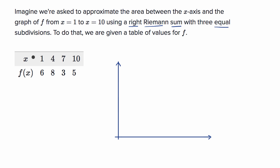We are going from x equals one to x equals 10, so let me mark off values one through ten on the x-axis. They give us the value of f of x when x equals one, two, three, four, five, six, seven, eight, nine, and ten.